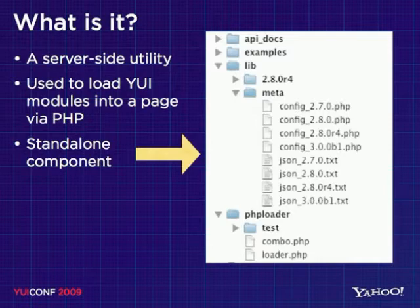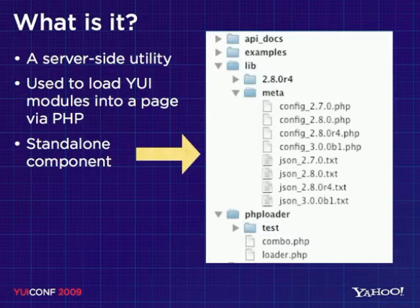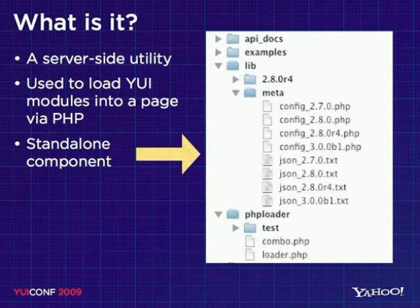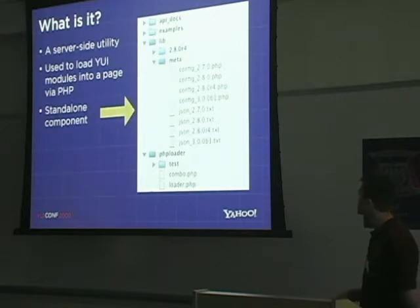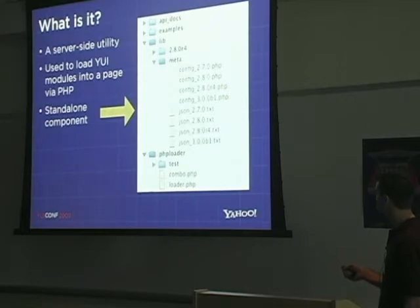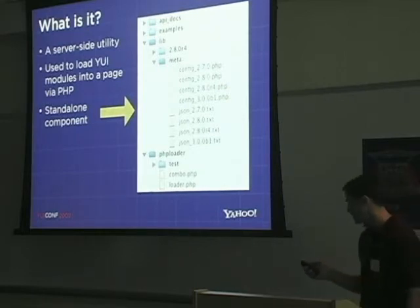There are a bunch of examples included with the download. There's a lib directory, and inside this lib directory is a meta folder. This meta folder contains the metadata that the loader uses to understand how to load components onto the page — we're going to talk more about that. There is also the loader itself, some test suites, and a combo handler.